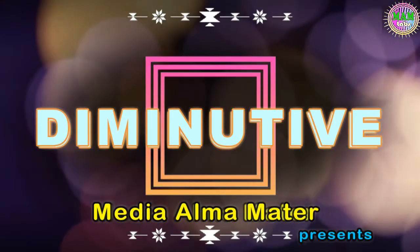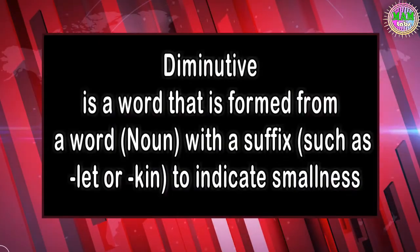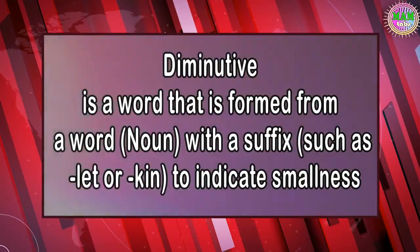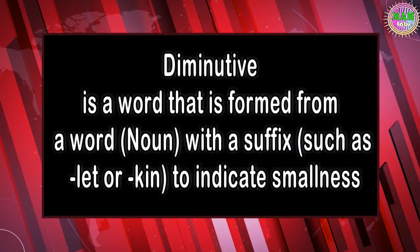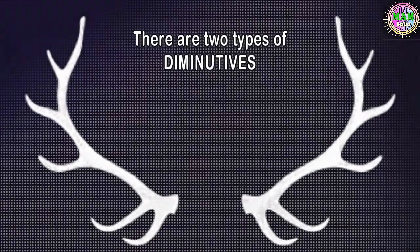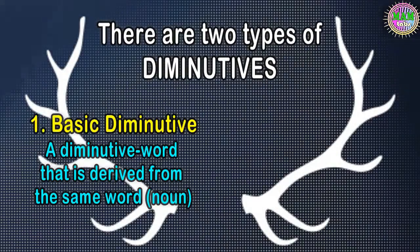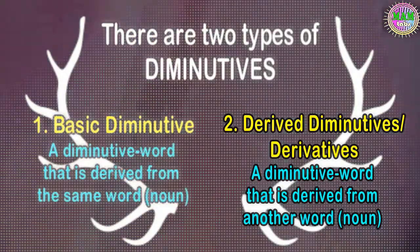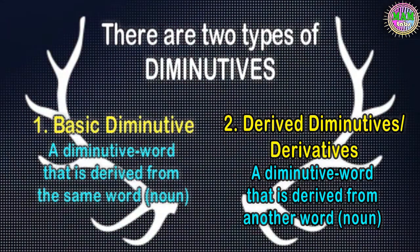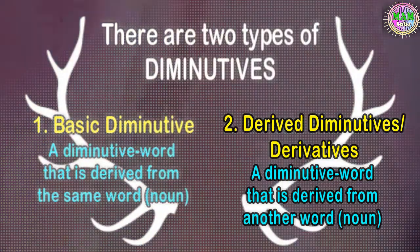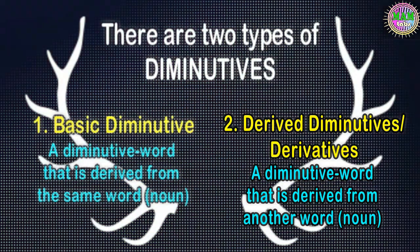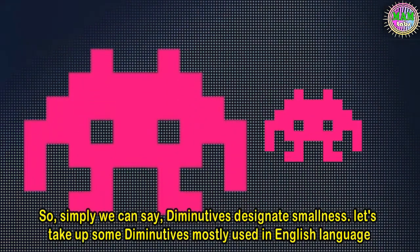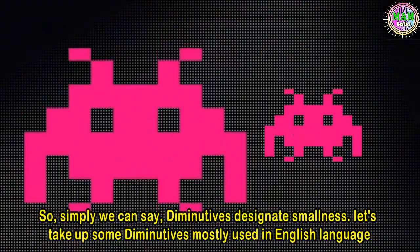Diminutive. A diminutive is a word that is formed from a noun with a suffix such as 'let' or 'kin' to indicate smallness. There are two types of diminutives. One is basic diminutive — a diminutive word derived from the same noun. The second is derived diminutives or derivatives — a diminutive word derived from another word. Simply, diminutives designate smallness. Let's look at some diminutives mostly used in the English language.